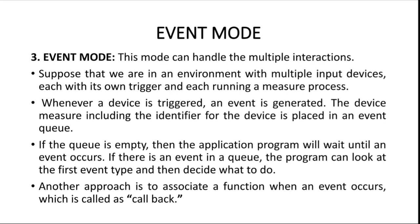If the queue is empty, the application program will wait until an event occurs — whenever you click the mouse or press the keyboard, the contents and identifier are placed in the event queue. If there is an event in the queue, the program looks at the first event type and decides what to do. For example, if it is a mouse event, it identifies the position; if it is a keyboard event from a specific keyboard, it identifies what letters were entered. It processes events one by one.